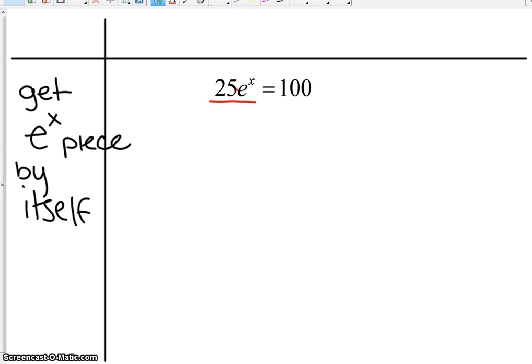So in this case, I want to get rid of the 25, which is connected by multiplication, so it's easy to do. Let's divide.